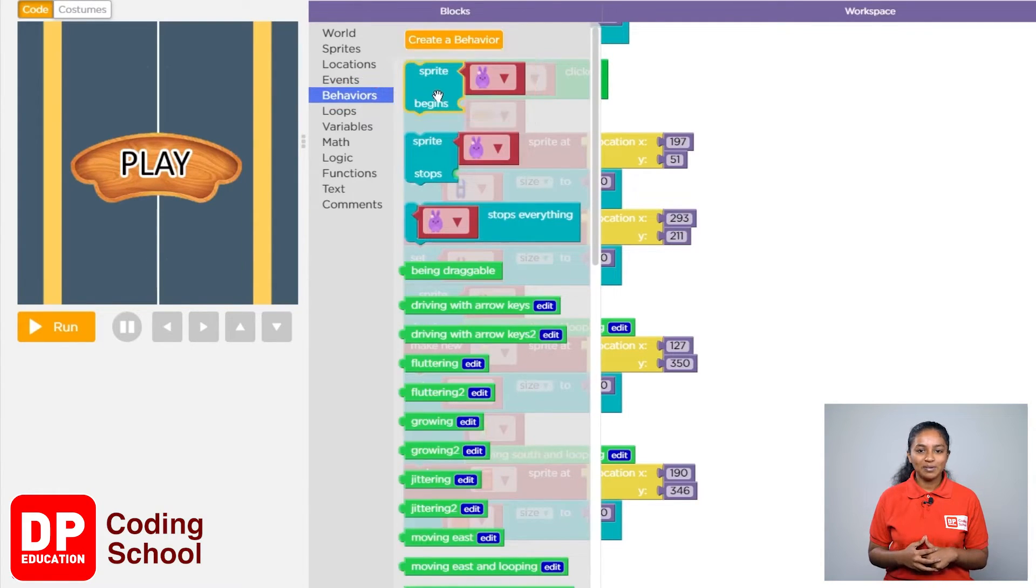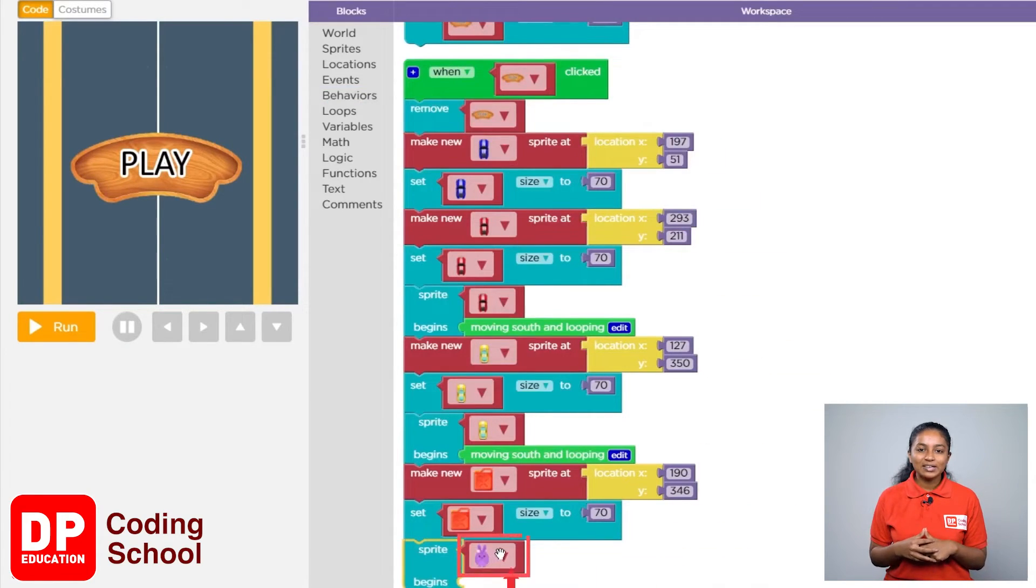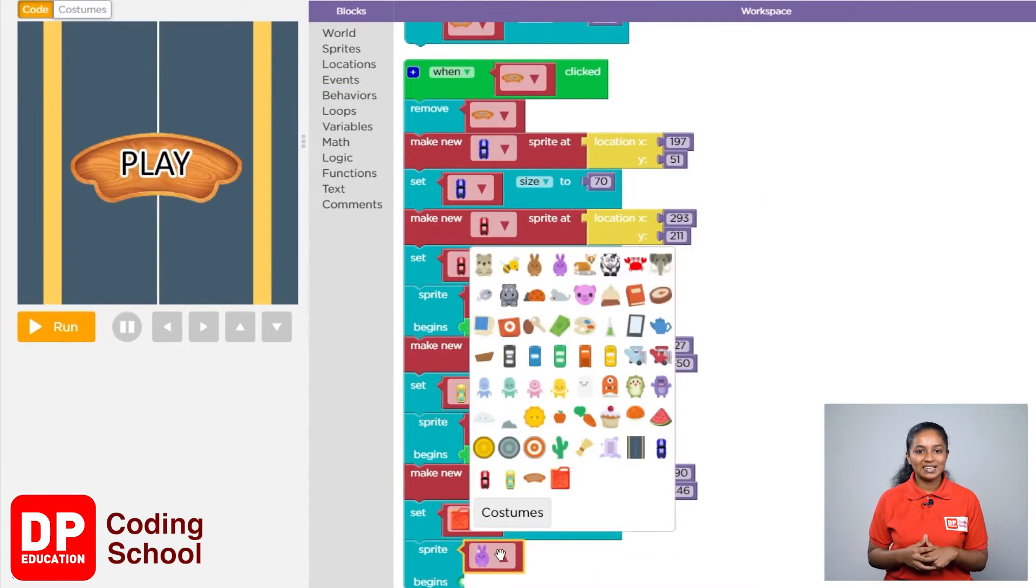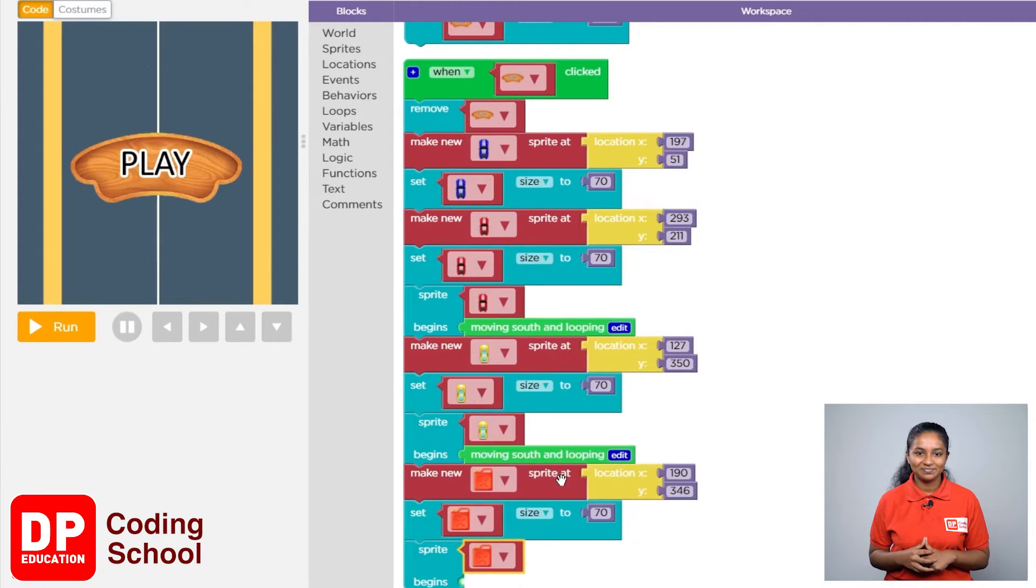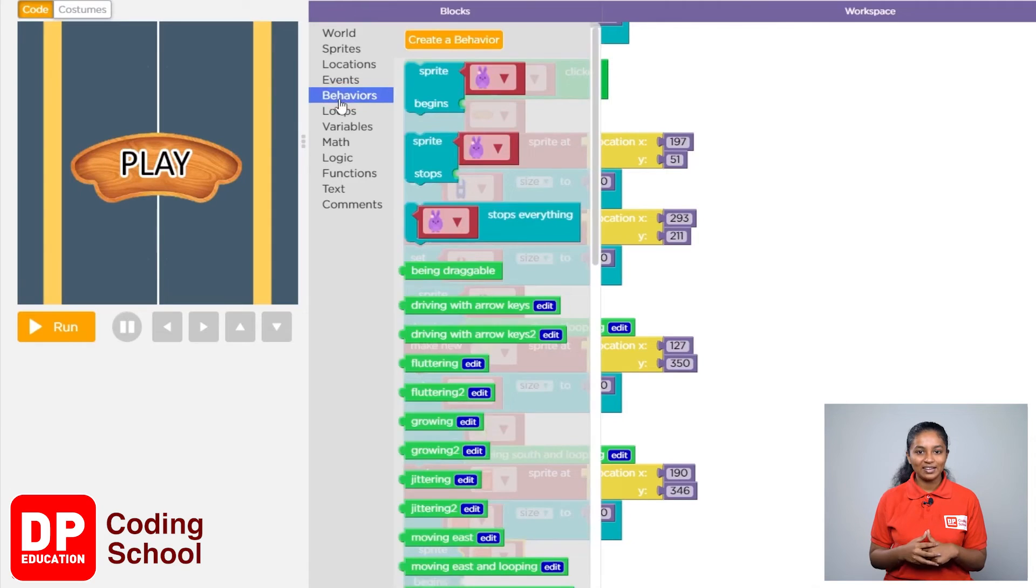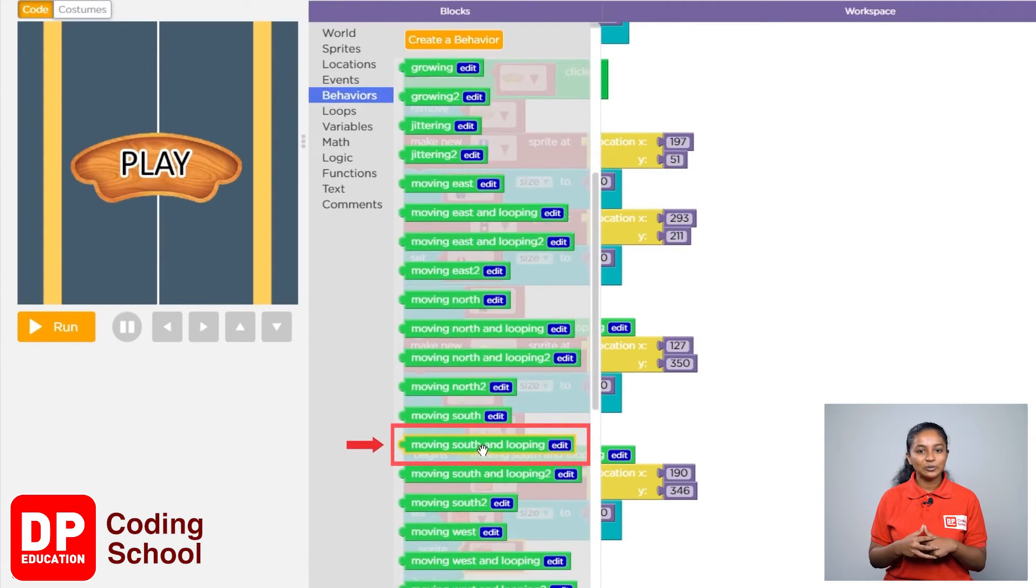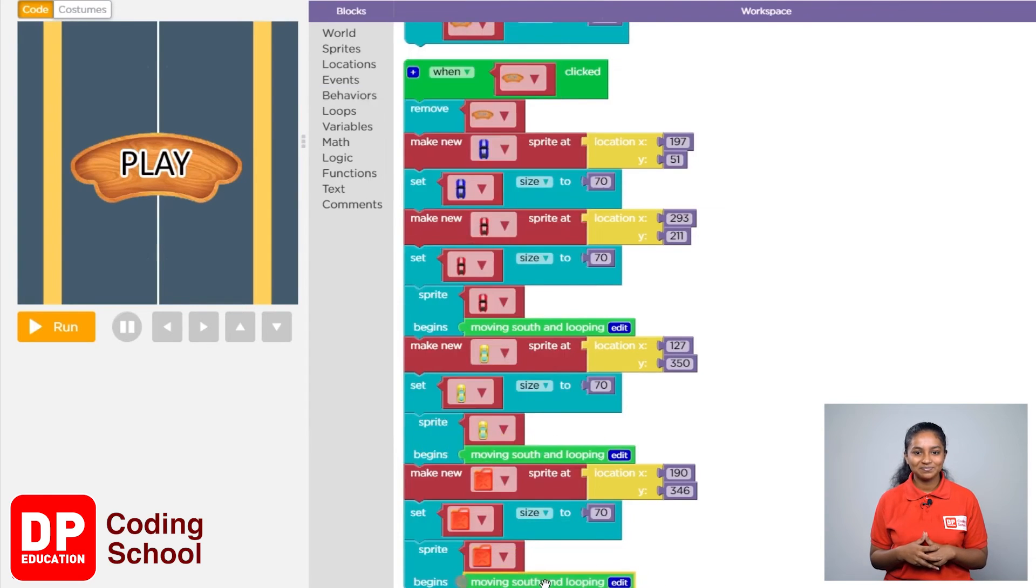Drag the Sprite Begins block below the Set Size To block. Click the small arrow and select the petrol can. Then, click on Behaviors again and drag the Moving South and Loop block, placing it in front of Sprite Begins.